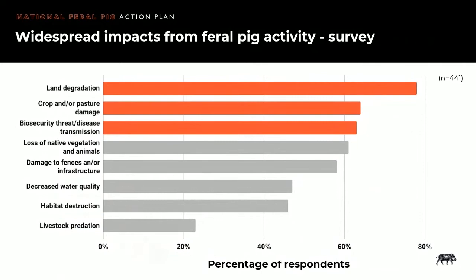Last year, as part of the development of the Action Plan, we conducted a survey with stakeholders to ensure that their views and needs were incorporated into the plan. A total of 776 people responded. The key impacts reported by land managers were land degradation, crop and/or pasture damage, and biosecurity threats and disease transmission. In this region, feral animal and weed management is the community's highest priority, followed by vegetation management, grazing pressure and surface water management, land degradation and economics — and feral pigs can impact on all of these.